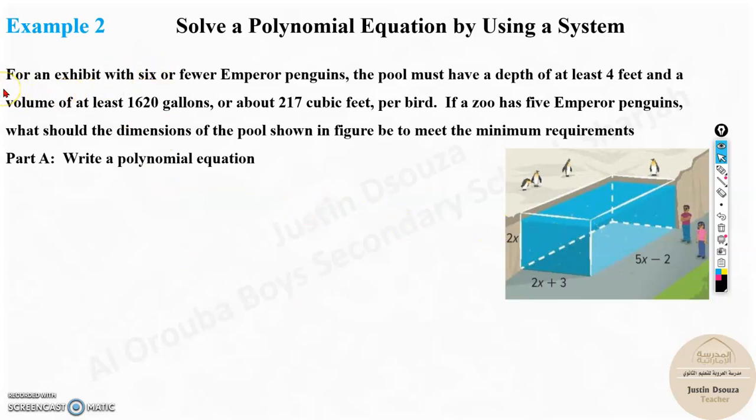We have the problem saying for an exhibit with six or fewer emperor penguins, the pool must have a depth of at least four feet and a volume of at least 1,620 gallons or about 217 cubic feet, that is feet to the power three per bird. This is important, per bird. If a zoo has five emperor penguins, what should be the dimensions of the pool shown in the figure to meet the minimum requirements.